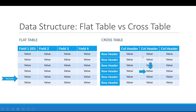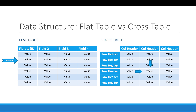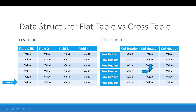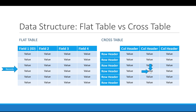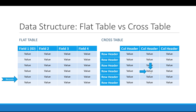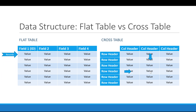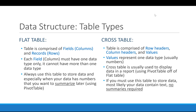A cross table, on the other hand, is a little different. As you can see from the illustration here, to read the cross table you need to cross between a row header and a column header to arrive at a certain value. You might hear different terminologies elsewhere, but what you need to keep in mind is that any table is essentially either a flat table or a cross table.